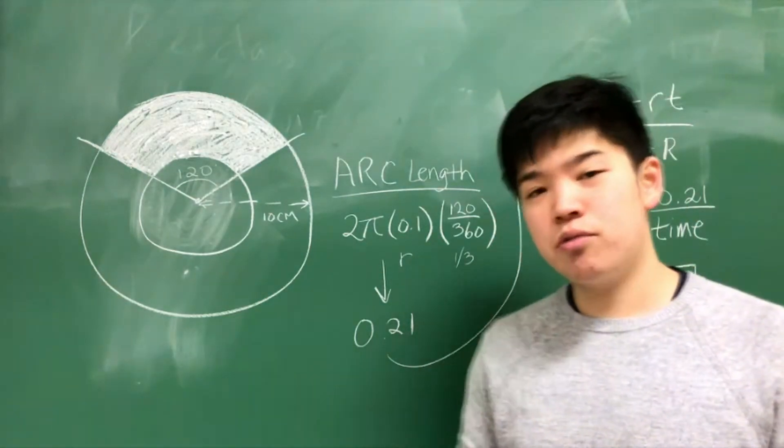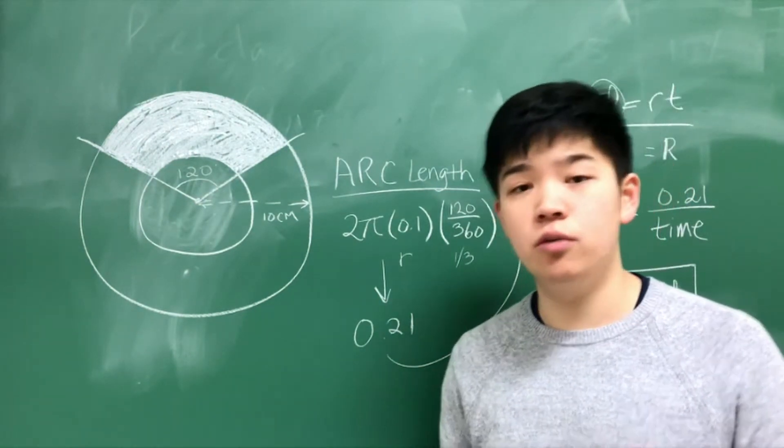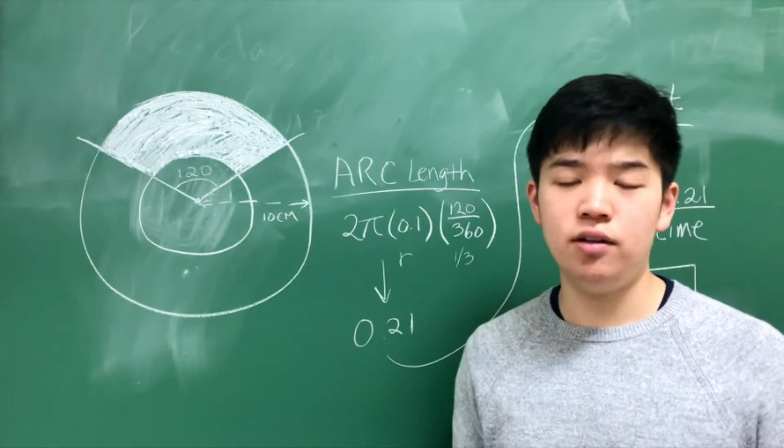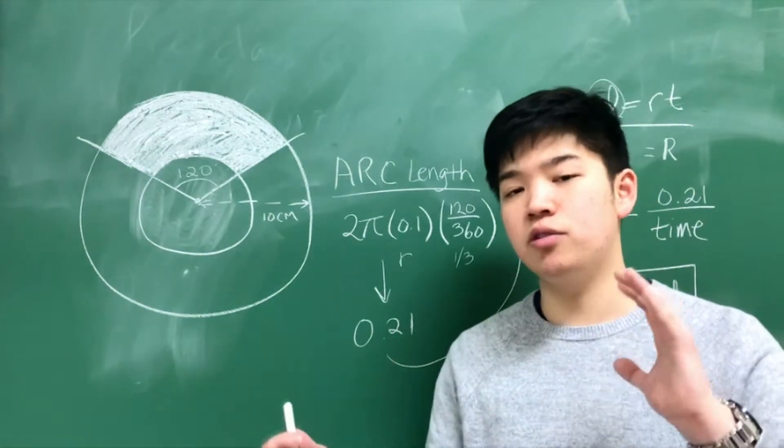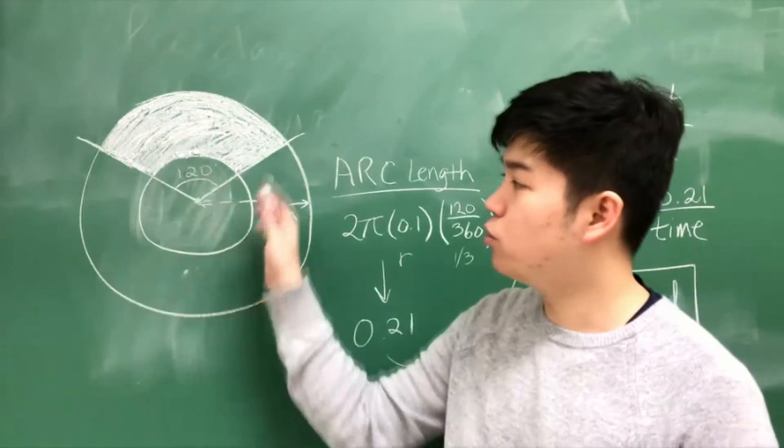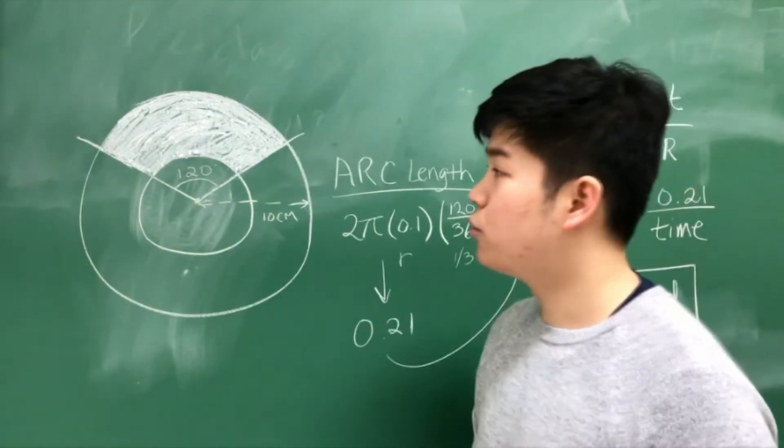The way we approach the speedometer is quite simple. We use the equation d equals RT to calculate the R, which is the rate of speed the car is moving. We calculate the distance and the time, the time being the amount of duration that the sensor sees the white strip of paper. Imagine this picture of the wheel with a white strip of paper that spans about 120 degrees.